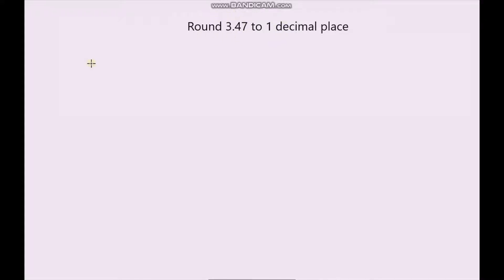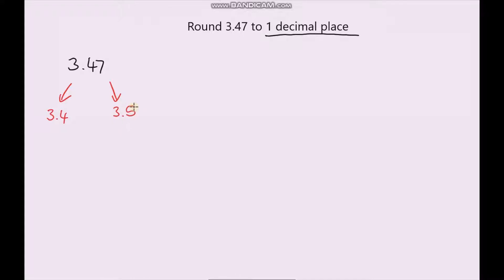So first let's round 3.47 to one decimal place. We're either going to be rounding it down to 3.4 or rounding it up to 3.5. Whenever you're thinking about rounding, always think about which number it is closer to. Is 3.47 closer to 3.4 or closer to 3.5? Hopefully you can see that 3.47 is definitely closer to 3.5, so we will be rounding up. So 3.5 is our answer.